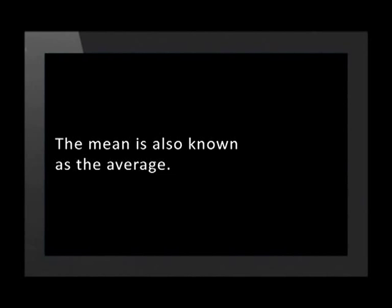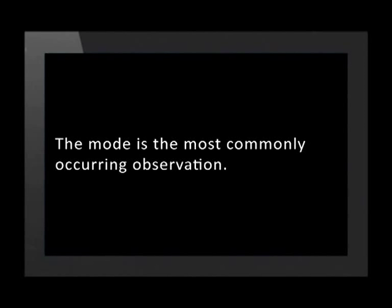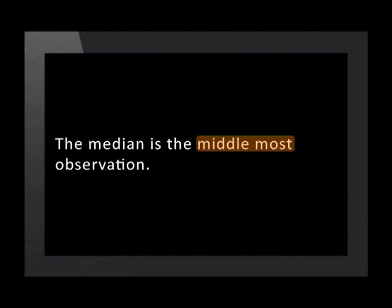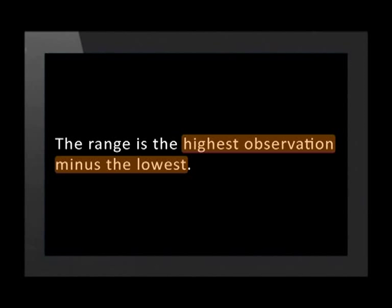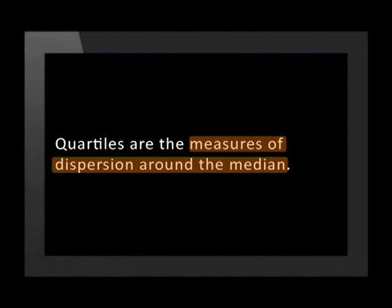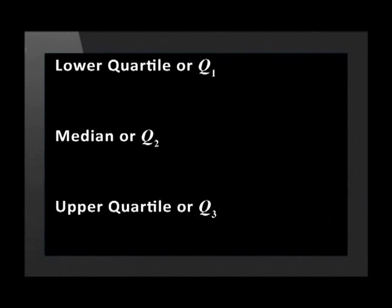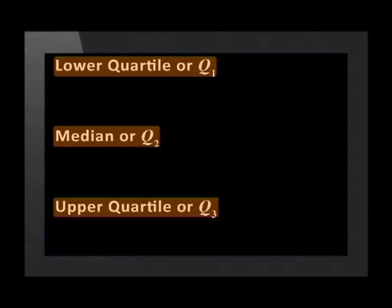Now let's revise the mean, mode, median, range, quartiles and interquartile range. The mean is also known as the average. The mode is the most commonly occurring observation. The median is the middle most observation. The range is the highest observation minus the lowest. Quartiles are the measures of dispersion around the median. Remember, there are three quartiles.